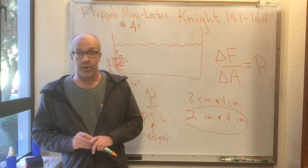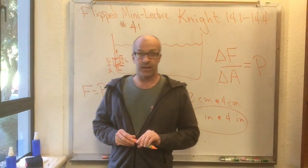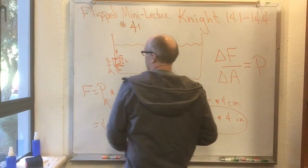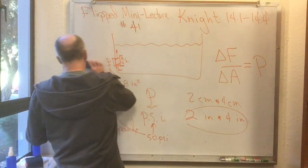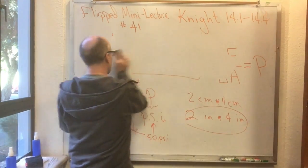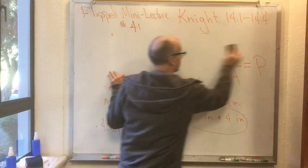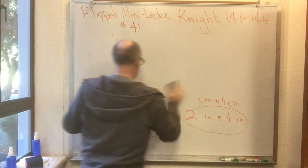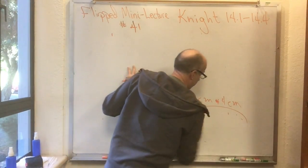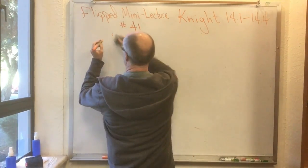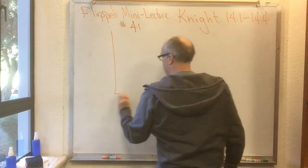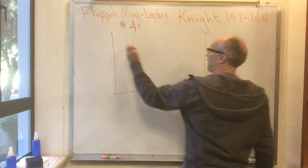We're going to go to section 14.4, which is buoyancy. Buoyancy is caused by the fact that pressure changes with depth. So the very first thing we need to understand here is: if you have a swimming pool, a beaker, or anything else with appreciable depth, we need to understand how pressure changes with depth.